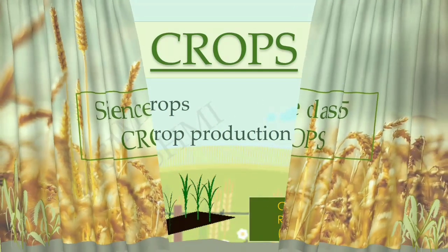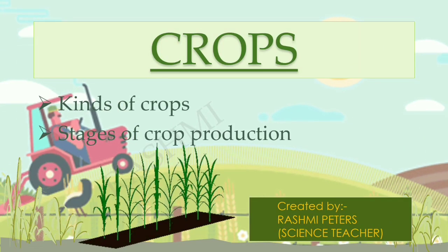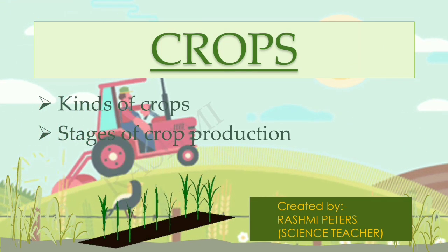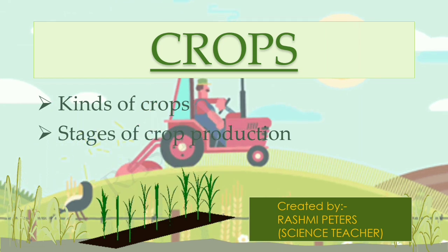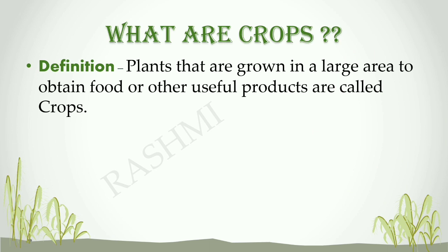Welcome dear children. Today through this video we are going to study about crops, the different kinds of crops, and stages of crop production. Plants that are grown in a large area to obtain food or other useful products are called crops. Different crops require different climate, soil, and amount of water to grow well.